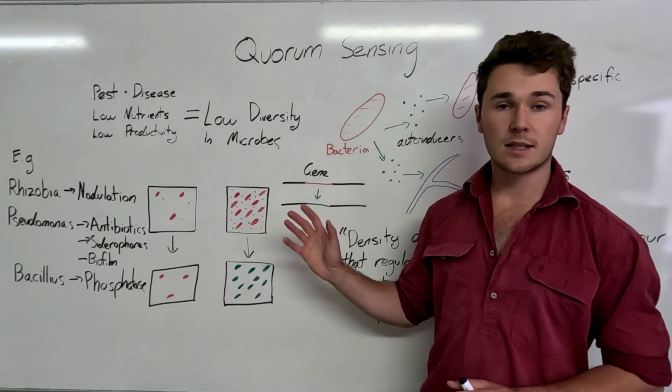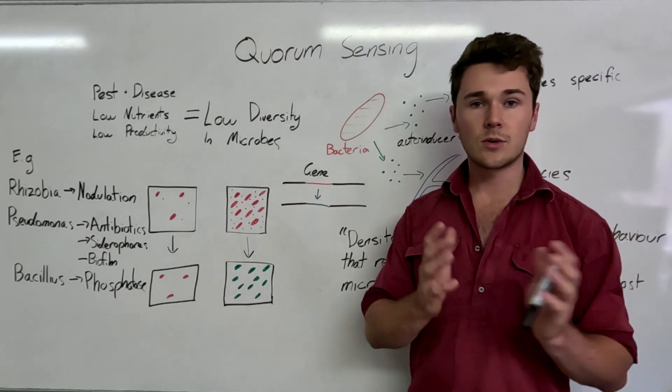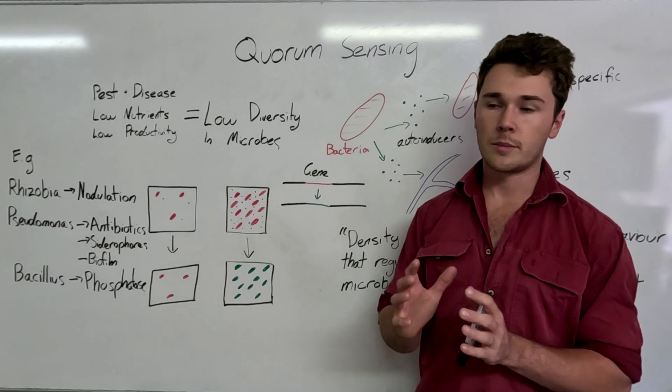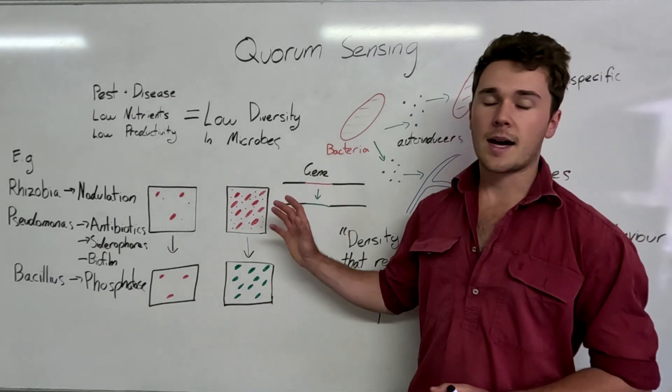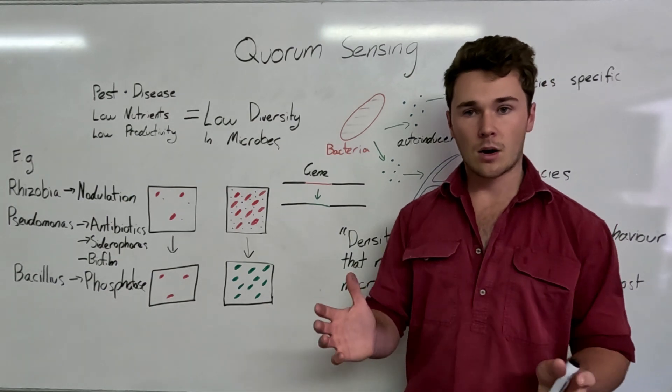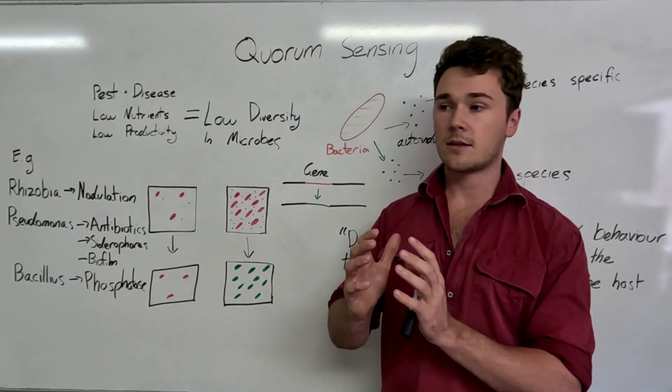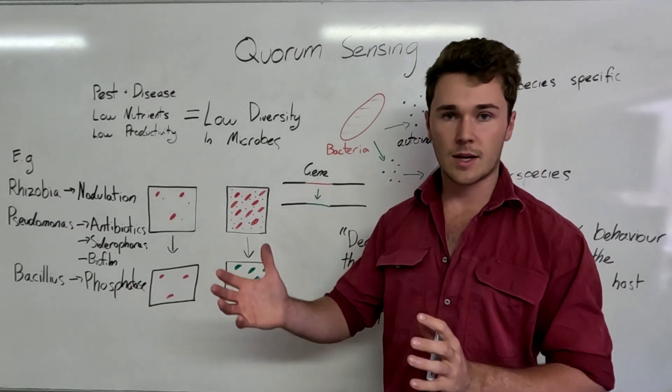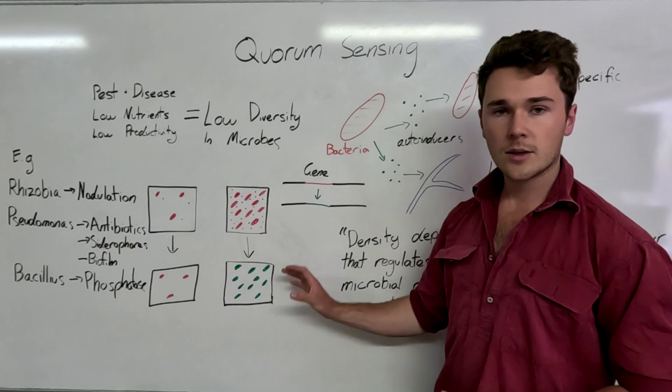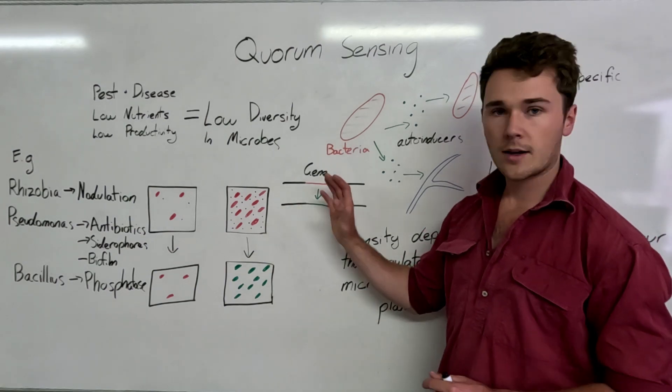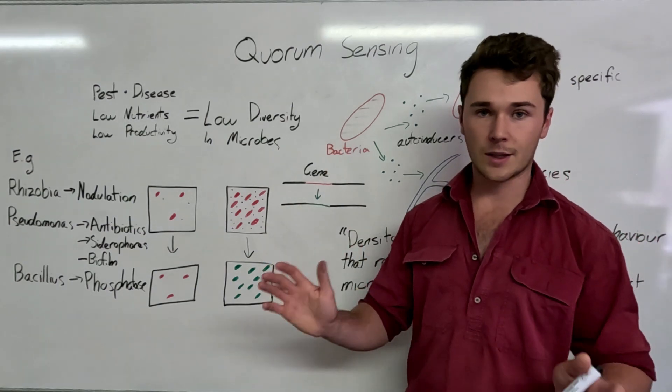Now, this is really important for soil microbes because it allows for the conservation of a lot of resources and energy by them. If they continuously expressing this gene, then they'll be using up all this energy for potentially no impact. There might only be an impact if you have a certain number of microbes expressing that particular gene. So these guys know that if they're not going to do it properly, there's no point in doing it at all.